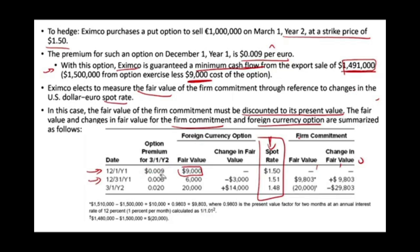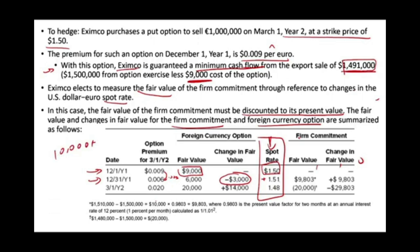By year-end, the option premium dropped to $0.006 — down $0.003 — due to time decay, so the change in fair value of the option is negative $3,000. For the firm commitment: we made a commitment to receive 1 million euros, and the spot rate moved from $1.50 to $1.51, meaning the commitment gained $10,000 in value. Discounted to present value, the fair value of the firm commitment is $9,803. On March 1st, the option premium actually increased because the spot rate fell to $1.48, making the put option more valuable — the premium rose to $0.02, meaning the option is now worth $20,000, a gain of $14,000.